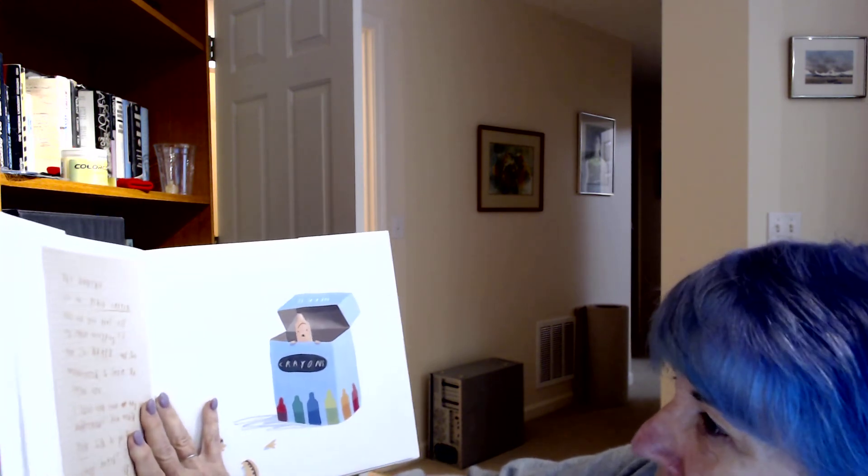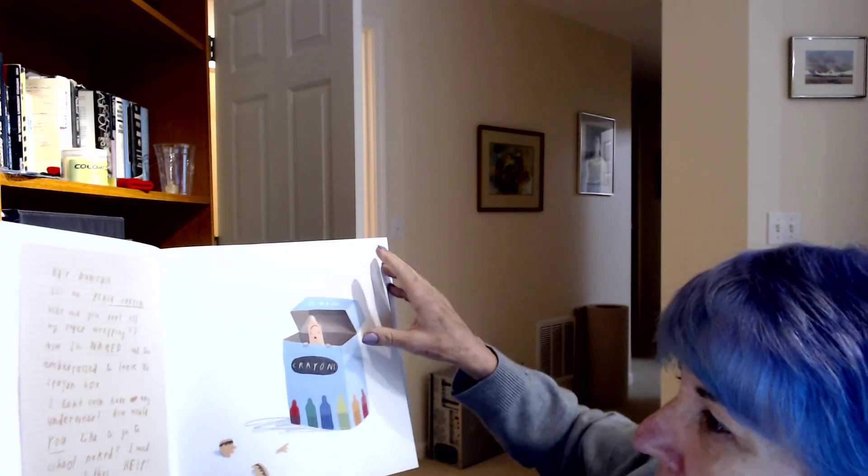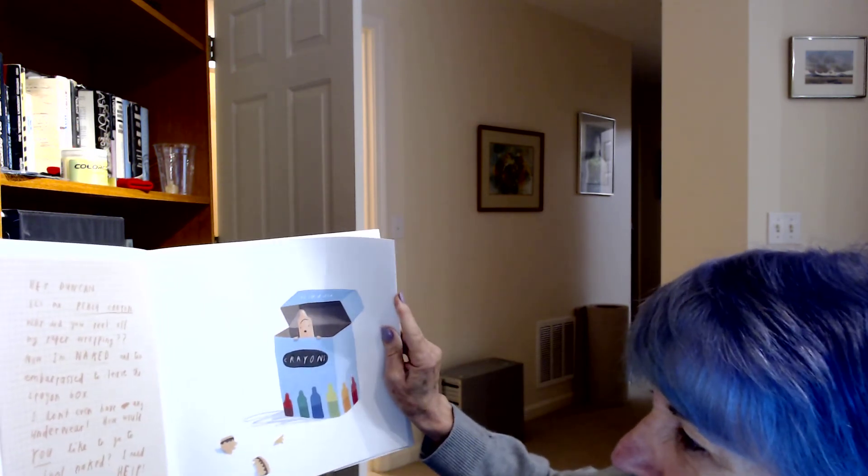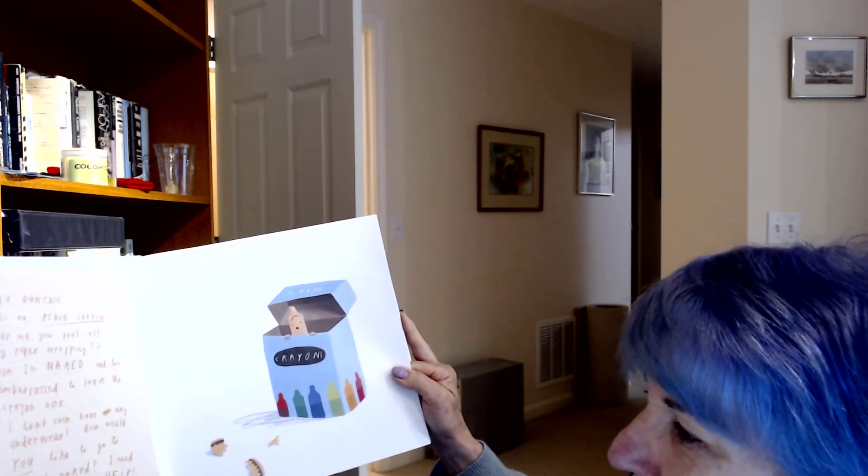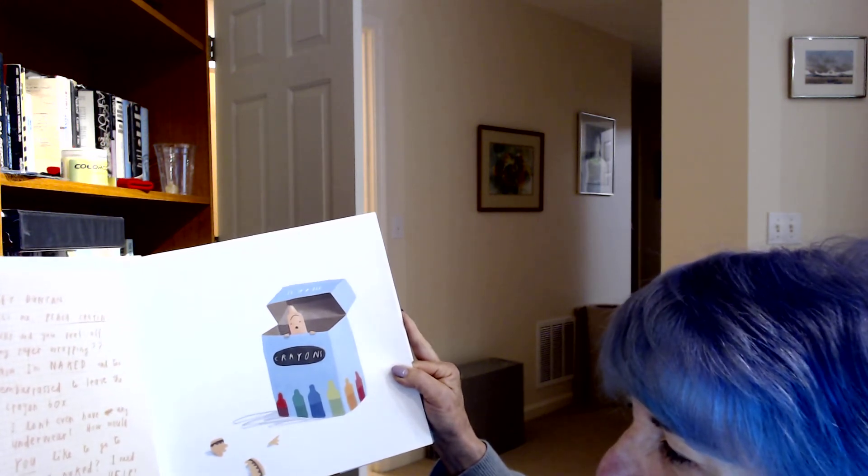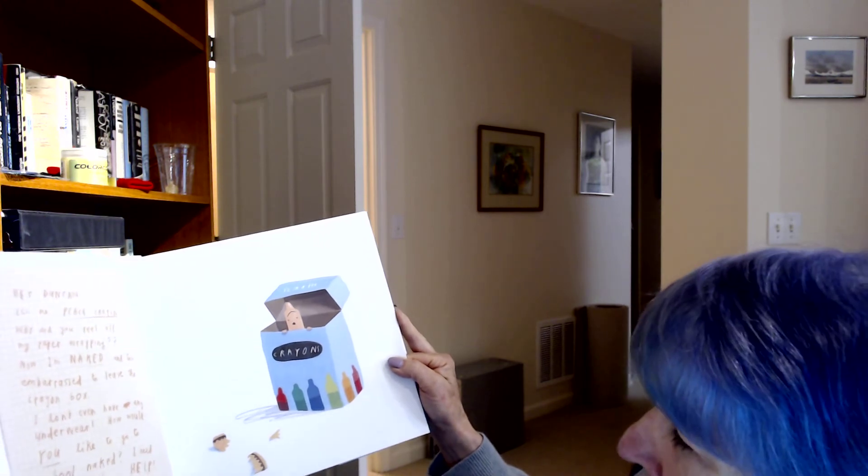Hey, Duncan, it's me, Peach Crayon. Why did you peel off my paper wrapping? Now I'm naked and too embarrassed to leave the crayon box. I don't even have any underwear. How would you like to go to school naked? I need some clothes. Help! Your naked friend, Peach Crayon.